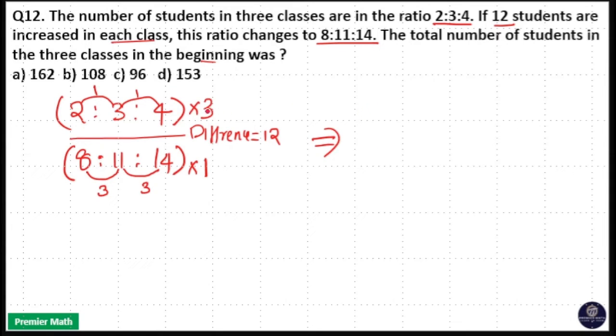That means 2 × 3 = 6, 3 × 3 = 9, 4 × 3 = 12. So here we have 6:9:12 initially and 8:11:14 after.